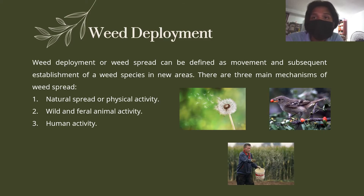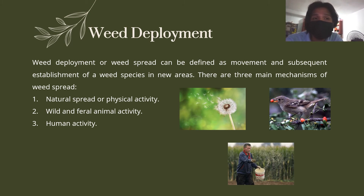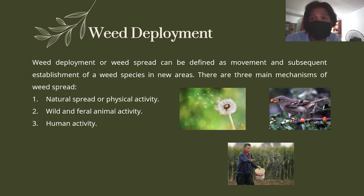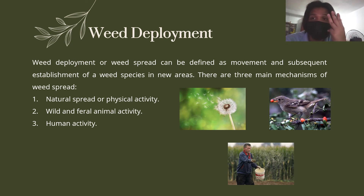Weed deployment, or weed spread, can be defined as the movement and subsequent establishment of a weed species in new areas. There are three main mechanisms of weed spread: one is natural spread or physical activity, two is wild and feral animal activity, and three is human activity.